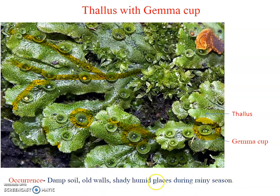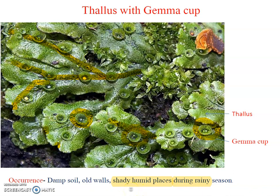Marchantia generally occurs during the rainy season in India, on humid and shady places. It does not occur in direct sunlight or dry places. Bryophytes require water for fertilization and land for normal life, so Bryophyta is called amphibian plants. This is an important point — Bryophyte is amphibian because it requires water for reproduction and land for normal life.